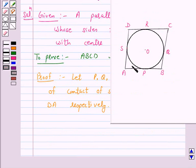Now, lengths of two tangents drawn from an external point A to a circle are equal. Therefore, AP is equal to AS.